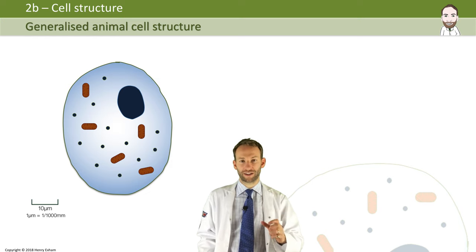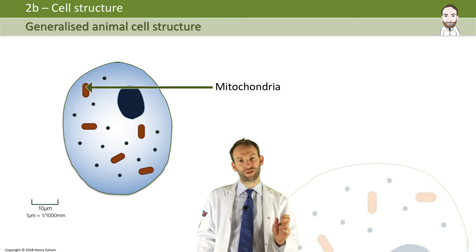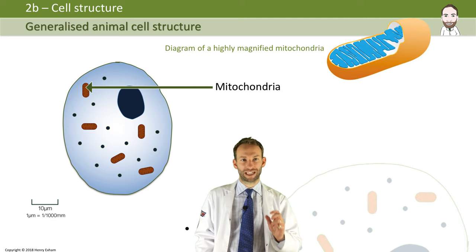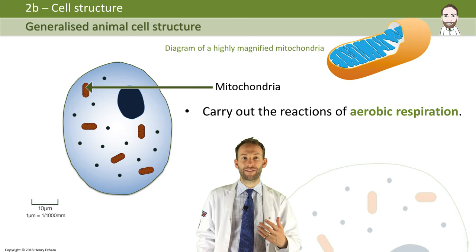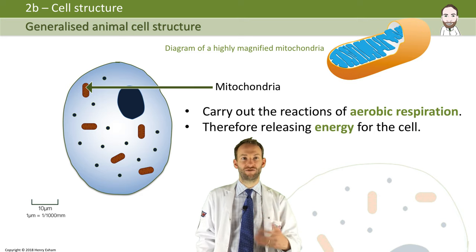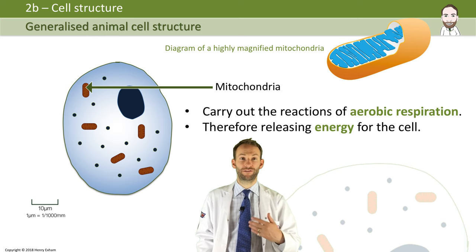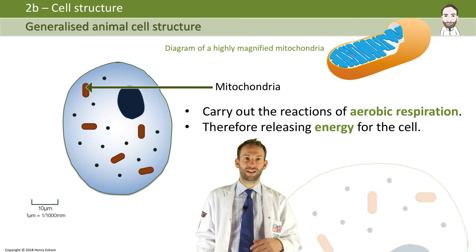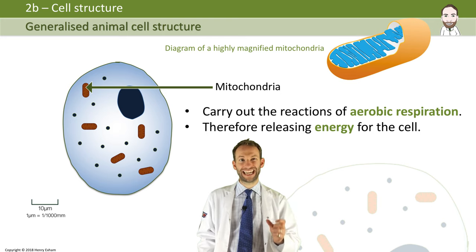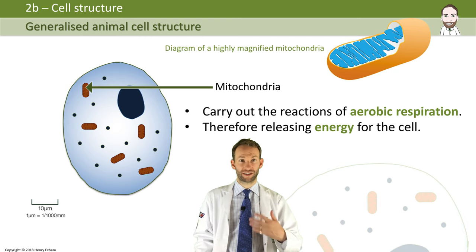Another thing that cells have are mitochondria — these sort of capsule-shaped organelles. This is where aerobic respiration happens. That is a very important process because that is how energy is released for the cell to use from the food that the cell has. So it takes that food source, usually glucose, and breaks it down to release energy in the form of something called ATP, and that can power all of the processes that the cell needs to do, such as making proteins.